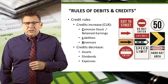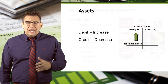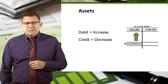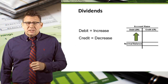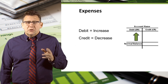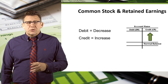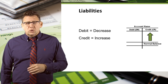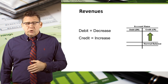Let's conclude this short video with a visual recap of the rules of debits and credits. Assets increase with debits and have normal debit balances. Dividends increase with debits and have normal debit balances. Expenses increase with debits and have normal debit balances. Common stock and retained earnings increase with credits and have normal credit balances. Liabilities increase with credits and have normal credit balances. Revenues increase with credits and have normal credit balances.